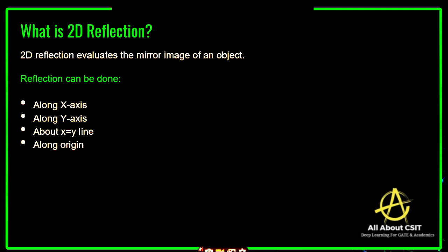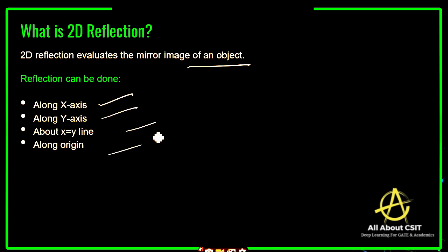Whenever we evaluate the word reflection, the first thing that comes to mind is a mirror image. A 2D reflection produces the mirror image of an object. The reflection can be done along the x-axis, along the y-axis, along the x equals y line, and along the origin.